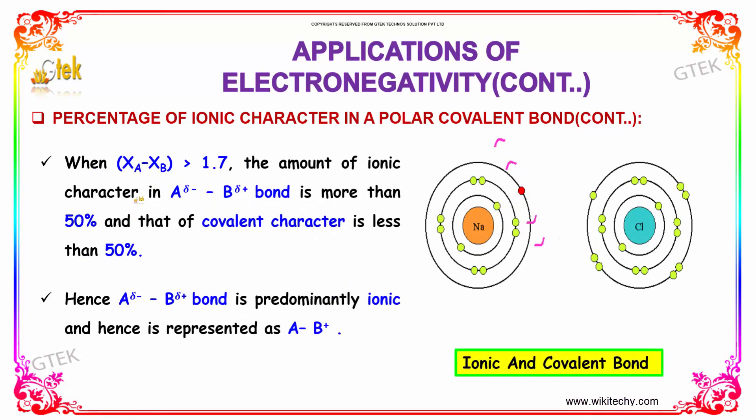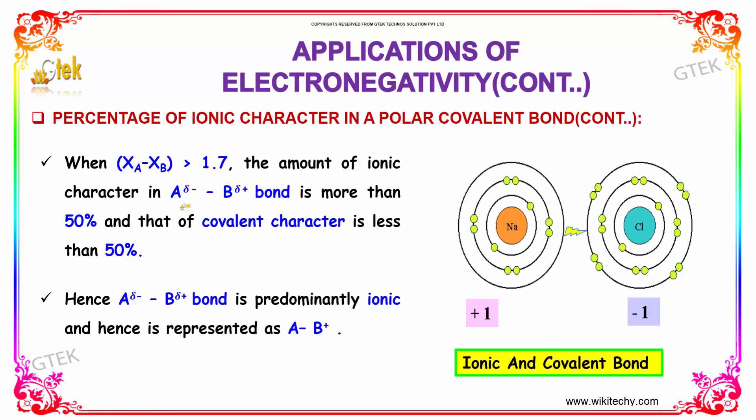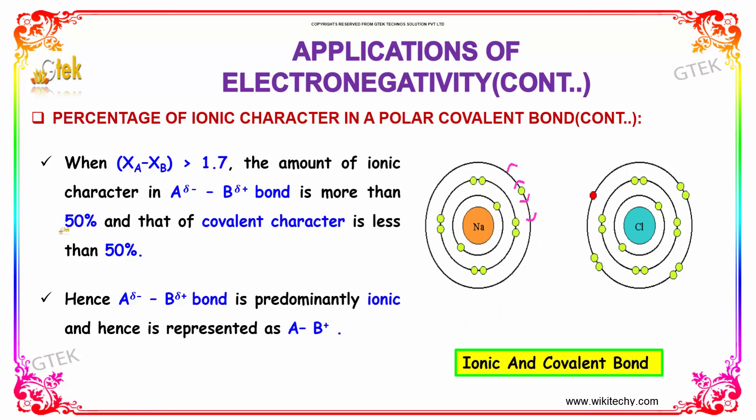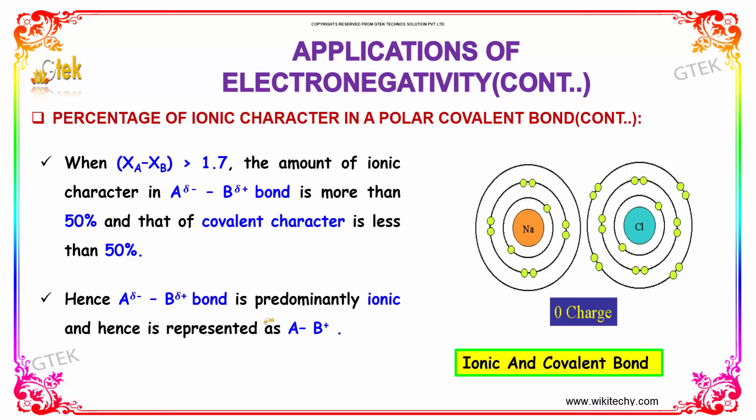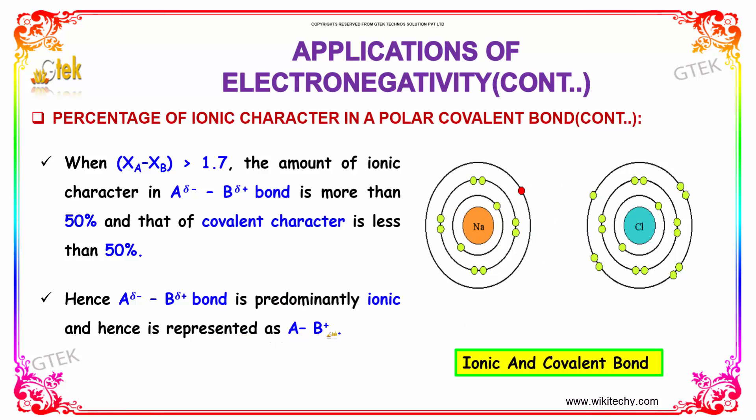Considering xA minus xB is greater than 1.7, the amount of ionic character in A delta minus B delta plus bond is more than 50% and that of covalent character is less than 50%. So this one is predominantly ionic and it is represented as A minus B plus.